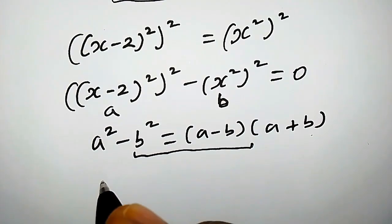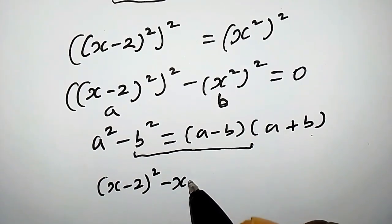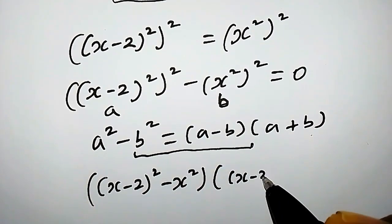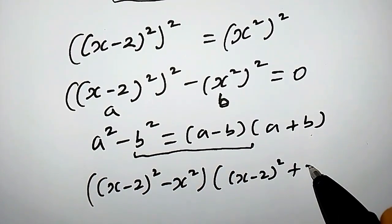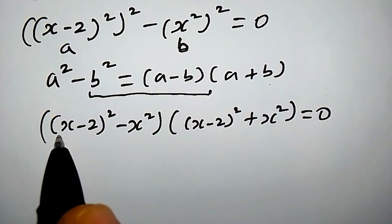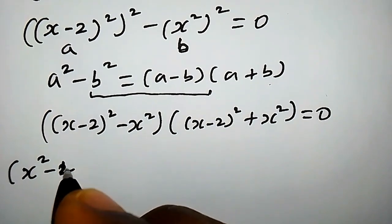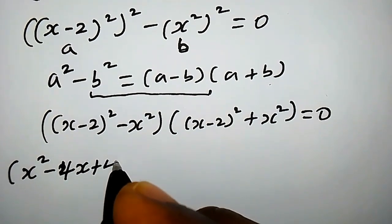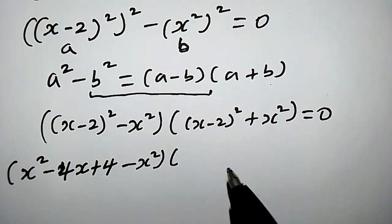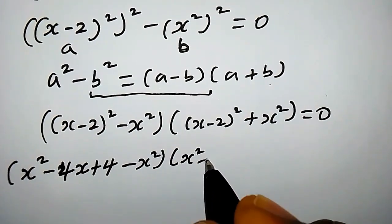Using this difference of squares property, we will have [(x minus 2) squared minus x squared] times [(x minus 2) squared plus x squared] equals 0. If you expand the first factor, you are going to get x squared minus 4x plus 4 minus x squared. And if you expand the second factor, you will get x squared minus 4x plus 4 plus x squared.